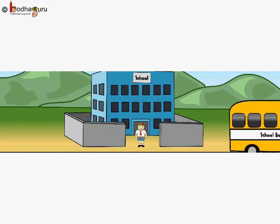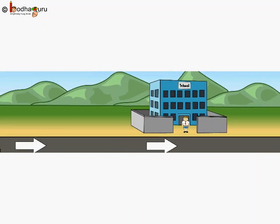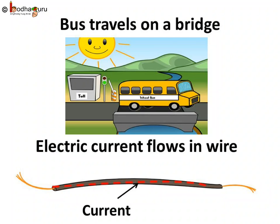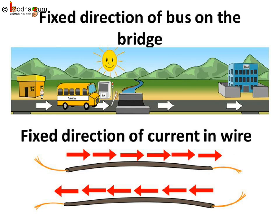Like the flow of the bus on the bridge, electricity is something that flows in an electric wire. The flow of electric current is in a fixed direction only, like the flow of a bus on a one-way bridge.